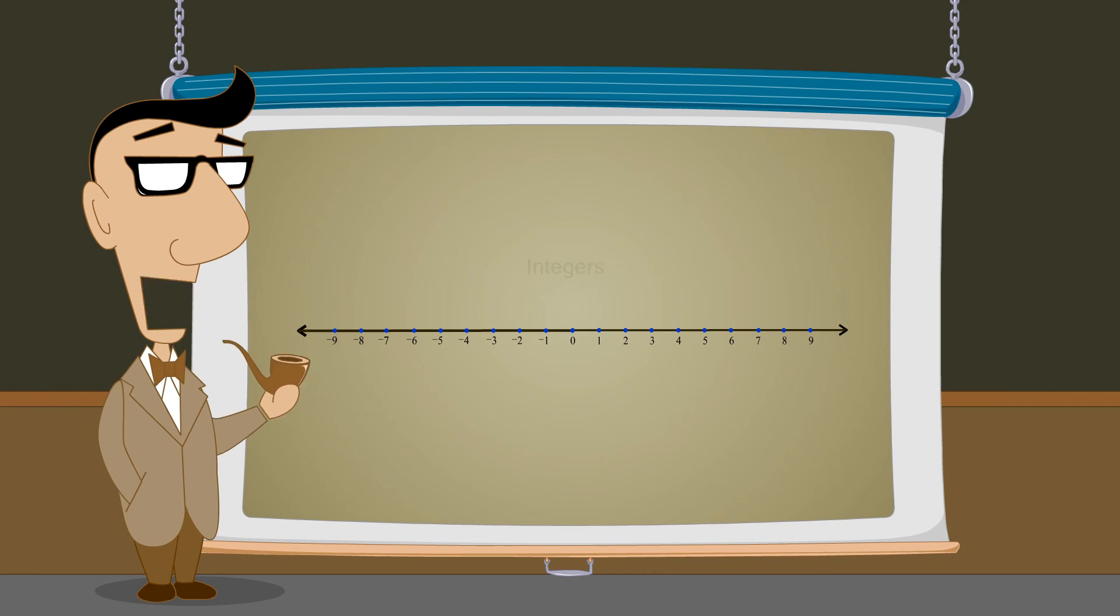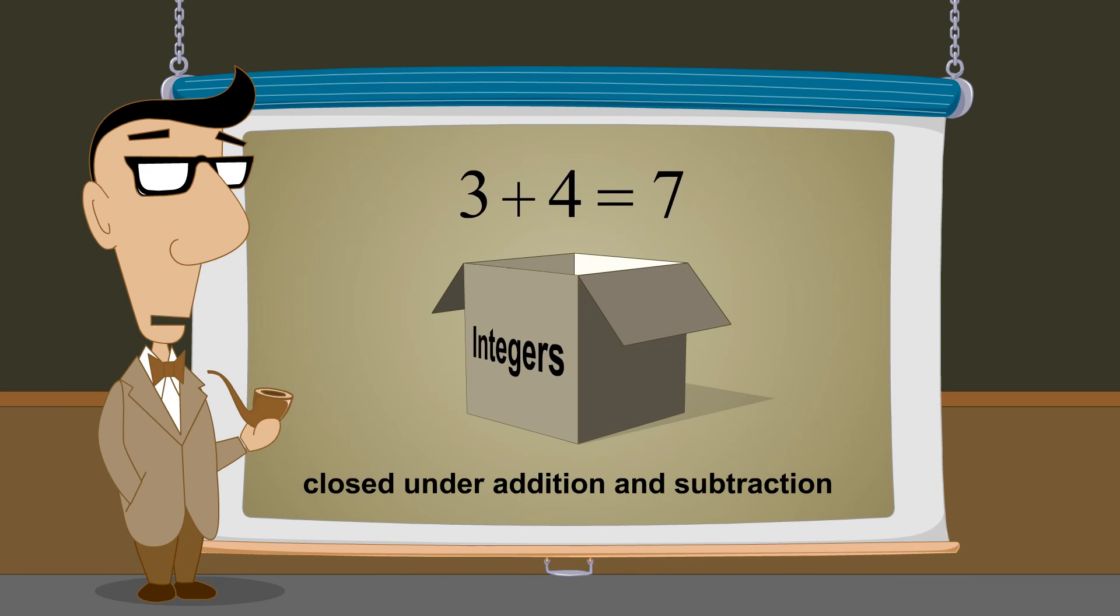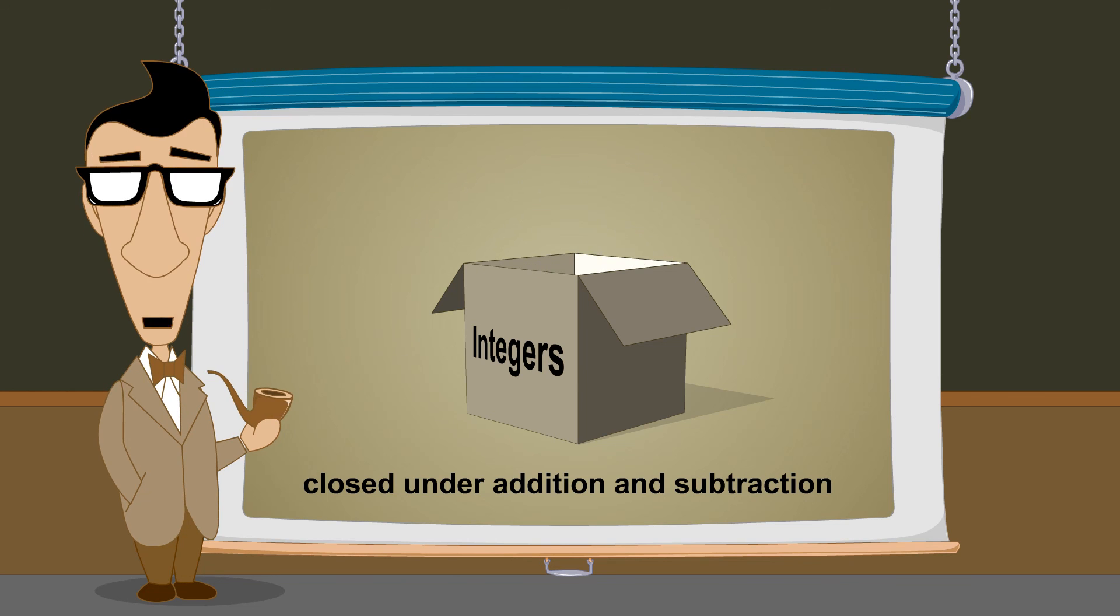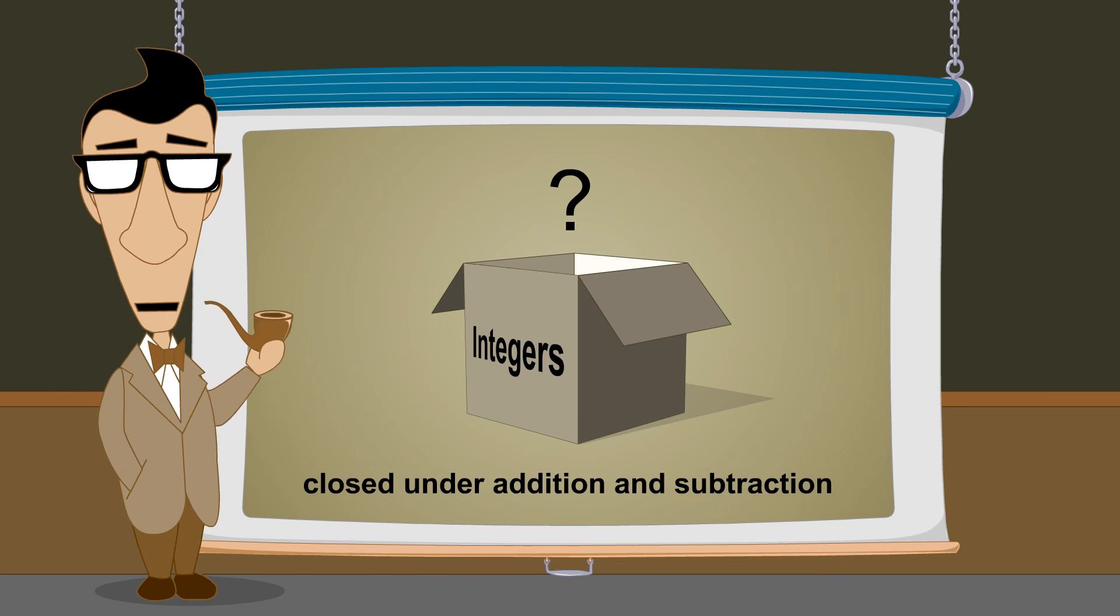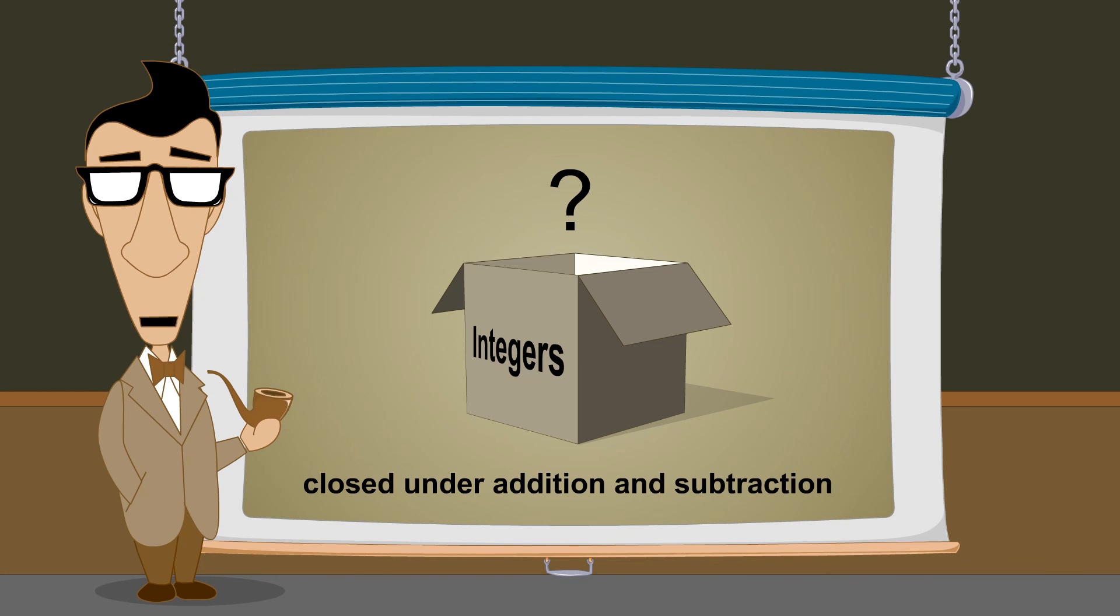With the invention of integers, we now have a much more powerful number system. Since the integers are closed under addition and subtraction, we can represent the result of adding or subtracting any numbers in our system. However, as we shall soon see, there are still some operations which cannot be represented using only integers.